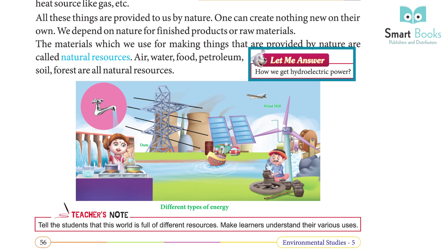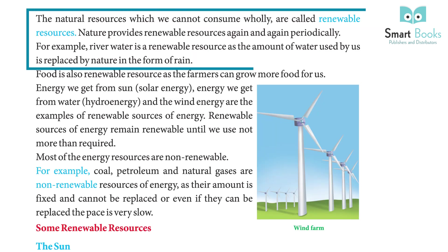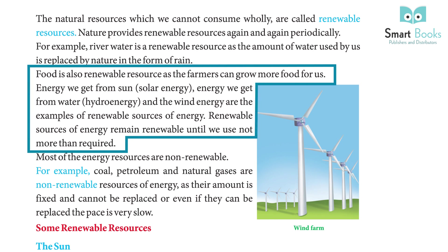The natural resources which we cannot consume wholly are called renewable resources. Nature provides renewable resources again and again periodically. For example, river water is a renewable resource as the amount of water used by us is replaced by nature in the form of rain. Food is also a renewable resource as farmers can grow more food for us.